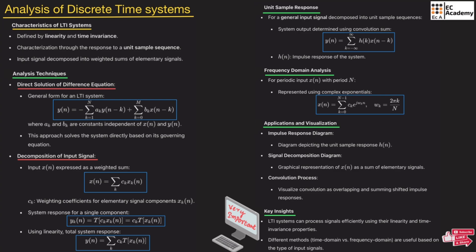Here we will analyze the discrete time system by considering the LTI representation, which means we will analyze the linear time invariant system. If we say LTI system, the system will have the property of linearity as well as time invariance. That is why this system is known as linear time invariant system.